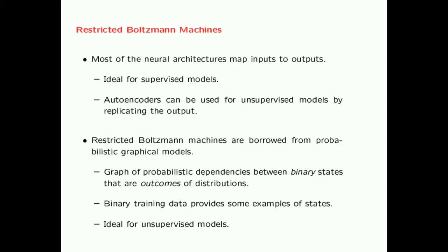They are borrowed from the notion of probabilistic graphical models. In these models, we have a graph of probabilistic dependencies between binary states that are outcomes of distributions. Most of the work on restricted Boltzmann machines uses binary states, meaning the states are drawn from 0 or 1, typically from a probabilistic distribution over binary states. The training data is also binary, providing examples of states. These techniques are ideal for unsupervised models.